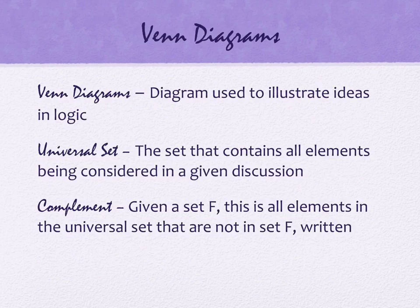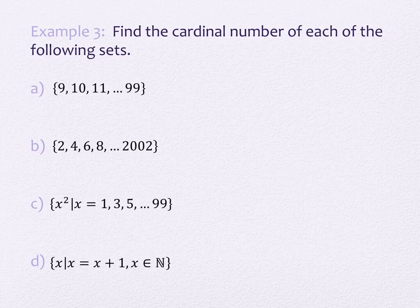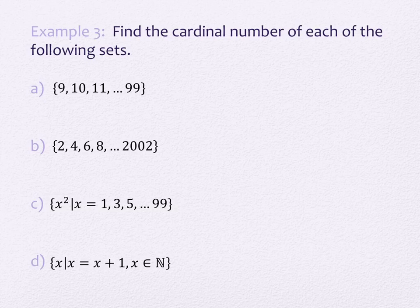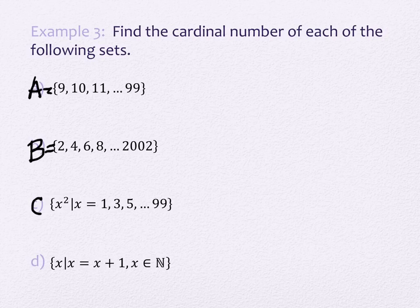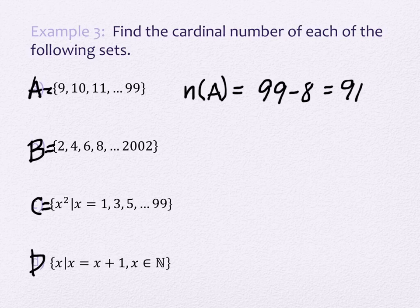Example three: find the cardinal number of each of the following sets. This feels a little like what we did with Gauss's method for counting. Let's call the sets A, B, C, and D — we always use capital letters for sets. The number of elements in set A: Amy said it's 99 minus 8, which is 91.